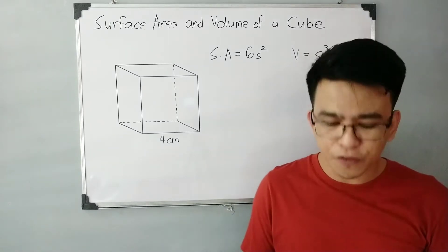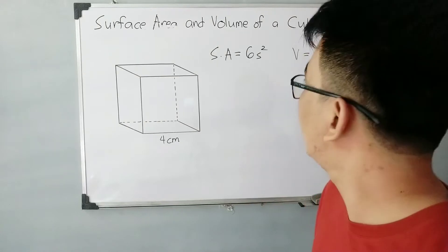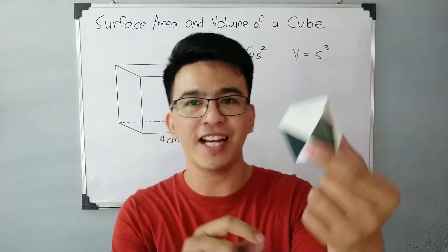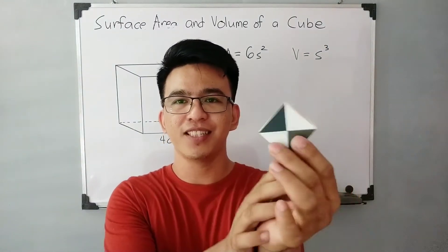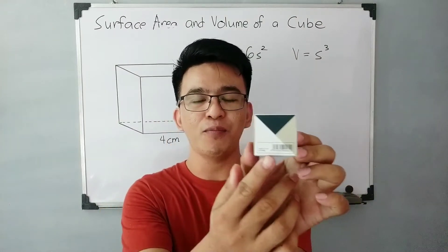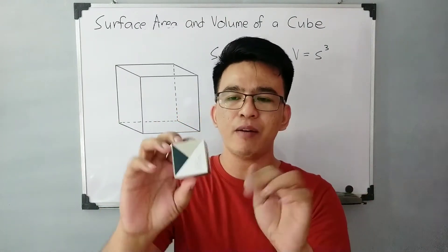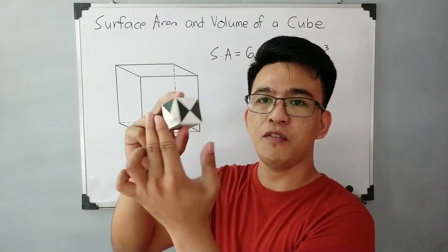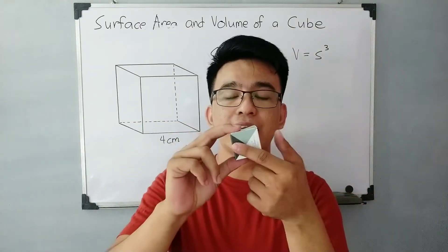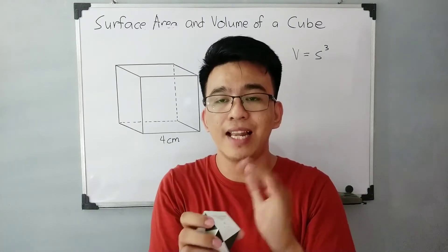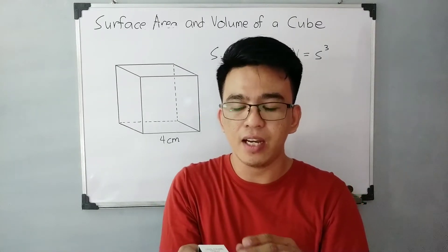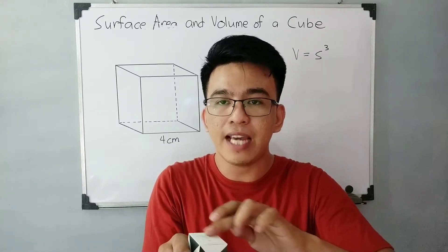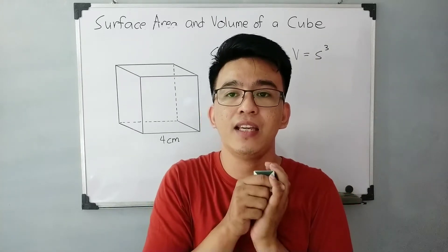Now, let's differentiate why the formula is like that, and what exactly are we calculating for the surface area and volume. I have here a cute-sized cube — this is a cube — it came from a box at home. With this cube, when we say surface area, you can notice that we have 6 faces: 1, 2, 3, 4, 5, and 6 faces on this cube. You'll notice that all the faces are squares.